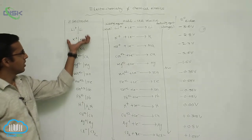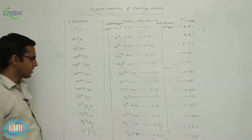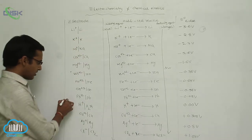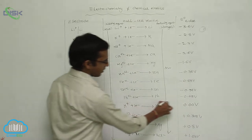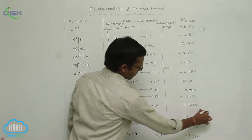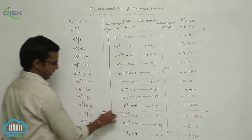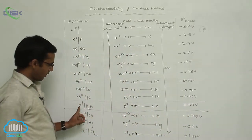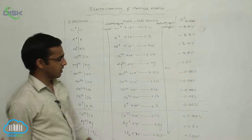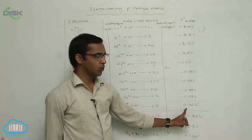This is the electrochemical series. In this electrochemical series, this is your standard electrode. The standard electrode potential value of hydrogen is 0 volt.